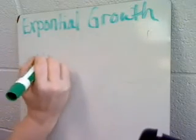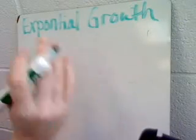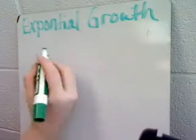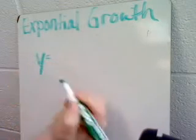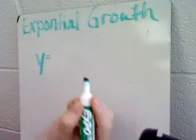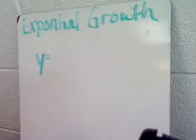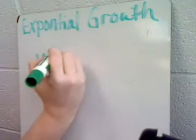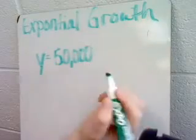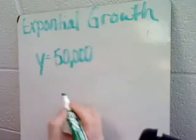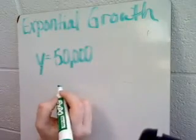First of all, we're looking for the number of people, or the ending balance. We're going to put the y variable to hold the place of the ending balance. Then we're going to put 50,000 in place of the a, because that's our beginning population.